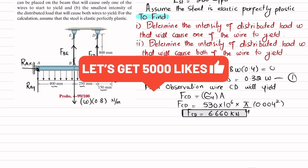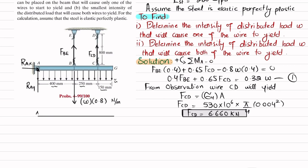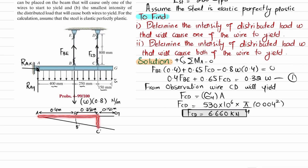Now consider the deformed beam. Point A is the pin, B moves to B′, and C moves to C′. The distances are: A to B = 0.4 m, B to C = 0.250 m, and C to G = 0.150 m. The vertical displacements δBE (from B to B′) and δCD (from C to C′) can be related using similar triangles.